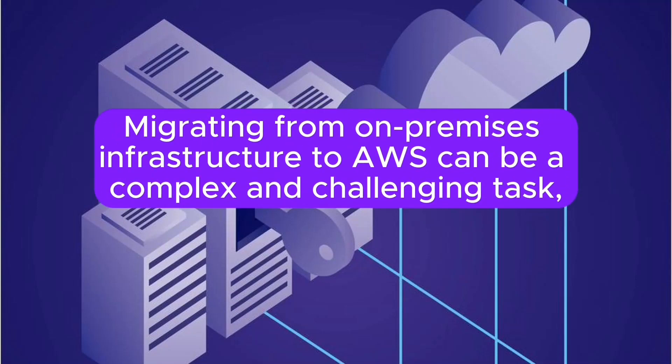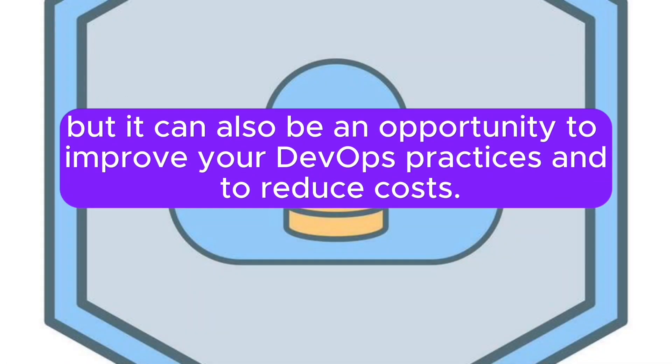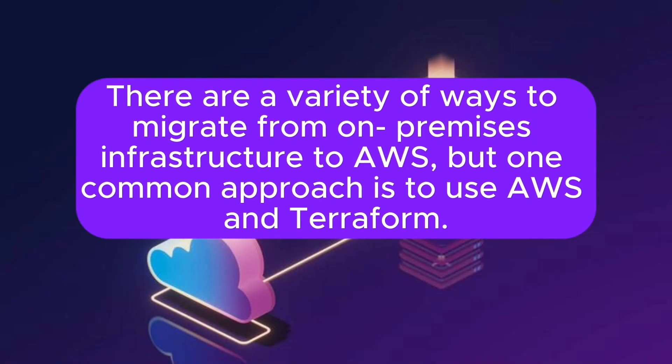Migrating from on-premises infrastructure to AWS can be a complex and challenging task, but it can also be an opportunity to improve your DevOps practices and to reduce costs. There are a variety of ways to migrate from on-premises infrastructure to AWS, but one common approach is to use AWS and Terraform.